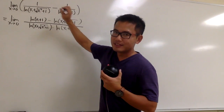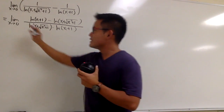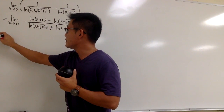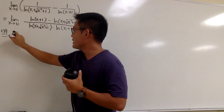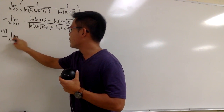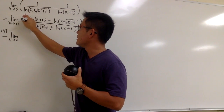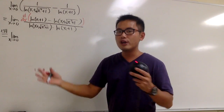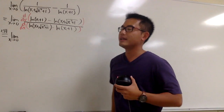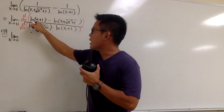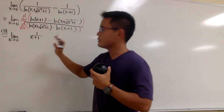We have a 0 over 0 situation, and this is actually better because we can use L'Hôpital's rule. By L'Hôpital's rule, we take the limit as x approaches 0. We differentiate the top and bottom. The derivative of ln(x + 1) is 1/(x + 1). Now I need to find the derivative of ln(x + √(x² + 1)).